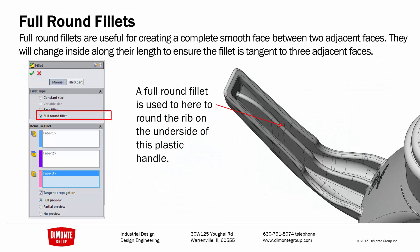Finally, the last fillet type is a Full Round Fillet, which allows you to round off geometry. In this instance, I've used it to add a smooth fillet on this rib — this is the handle of a food service product, and I wanted it to be comfortable in the user's hand.